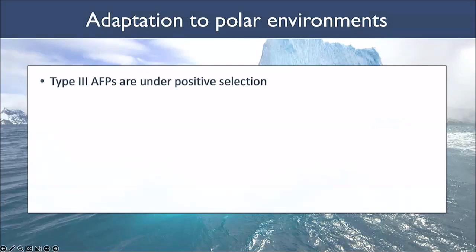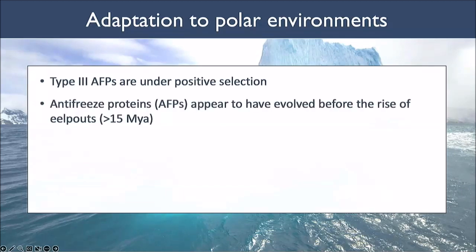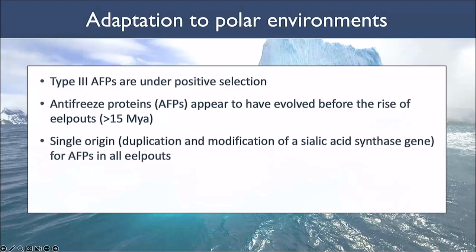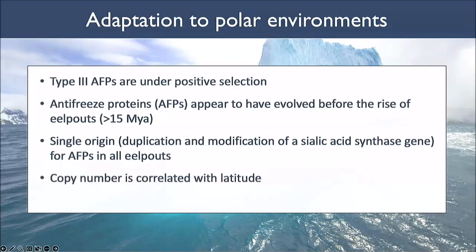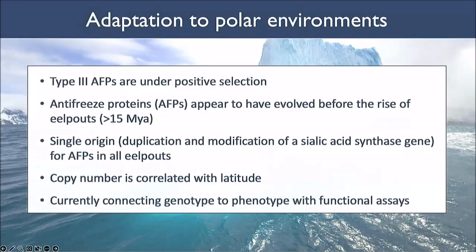Type 3 antifreeze proteins are under positive selection, with strong selective pressure for variation between copies and specifically mutations that change the encoded amino acid. We see that antifreeze proteins evolved before the cooling of the Southern Ocean and before the rise of the globally distributed eel pout family. There is a single origin of the antifreeze protein, inserted in exactly the same place in the genome. Copy numbers are correlated with latitude — with an asterisk, as we're still looking into it.